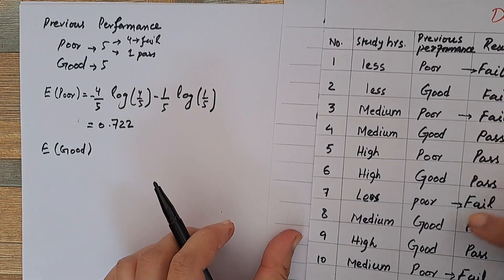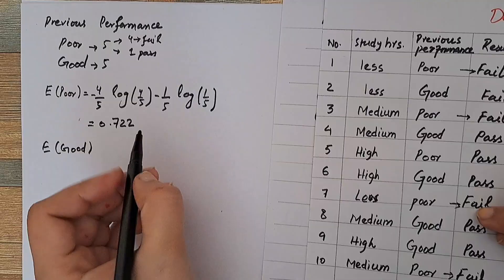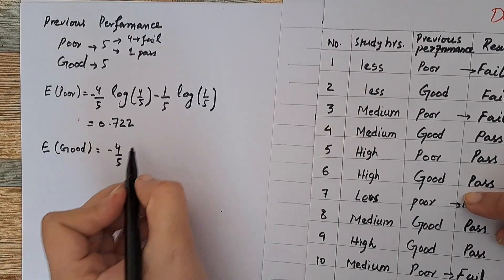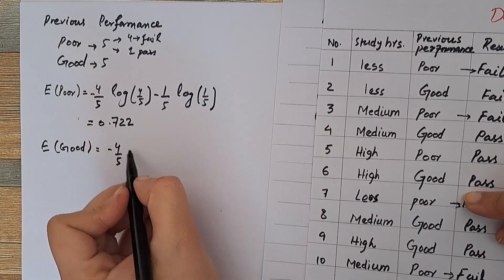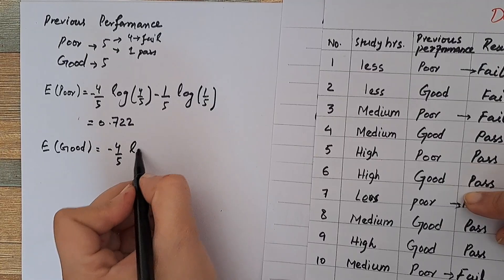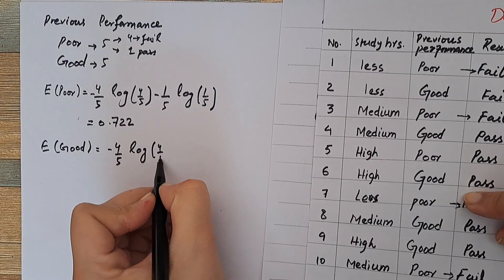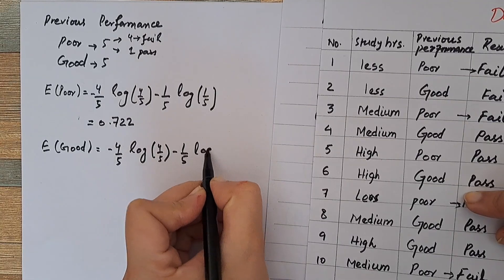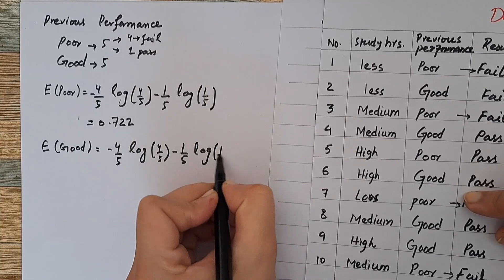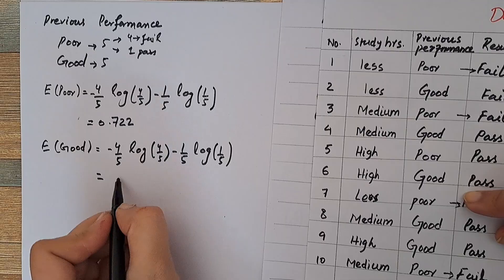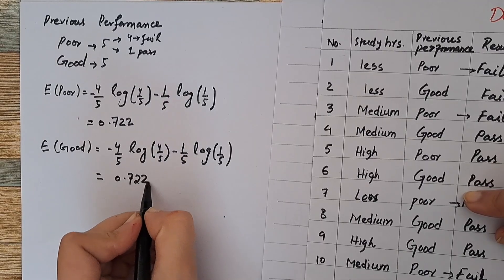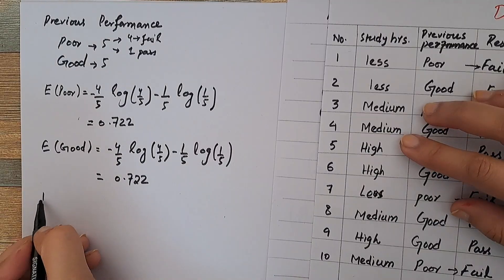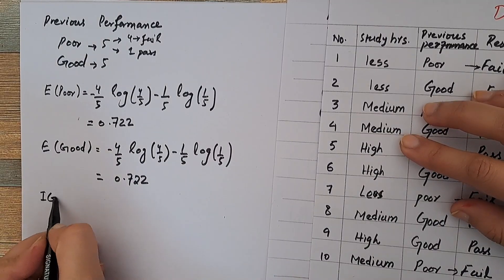For good previous performance, 4 students passed and 1 failed. Entropy of good equals negative of: (4/5)log(4/5) minus (1/5)log(1/5), which also simplifies to 0.722.